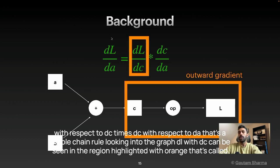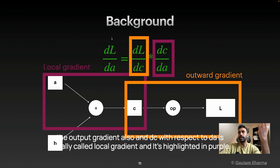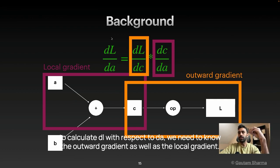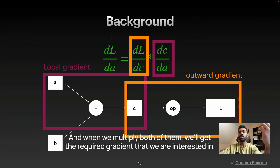DL with respect to DA can be written as DL with respect to DC times DC with respect to DA. That's a simple chain rule. Looking into the graph, DL with DC can be seen in the region highlighted with orange. That's called the outward gradient also. And DC with respect to DA is usually called local gradient and it's highlighted in purple. To calculate DL with respect to DA, we need to know the outward gradient as well as the local gradient. And when we multiply both of them, we'll get the required gradient that we are interested in.